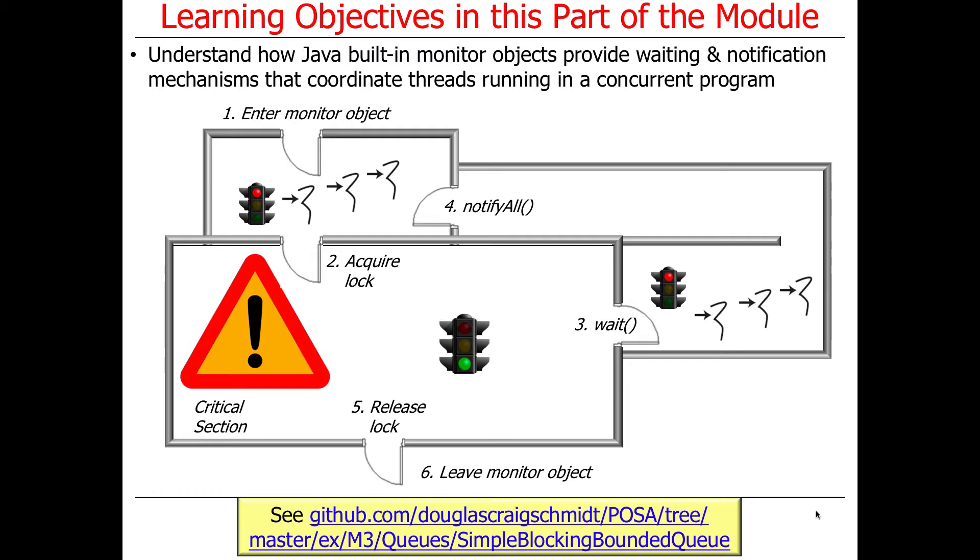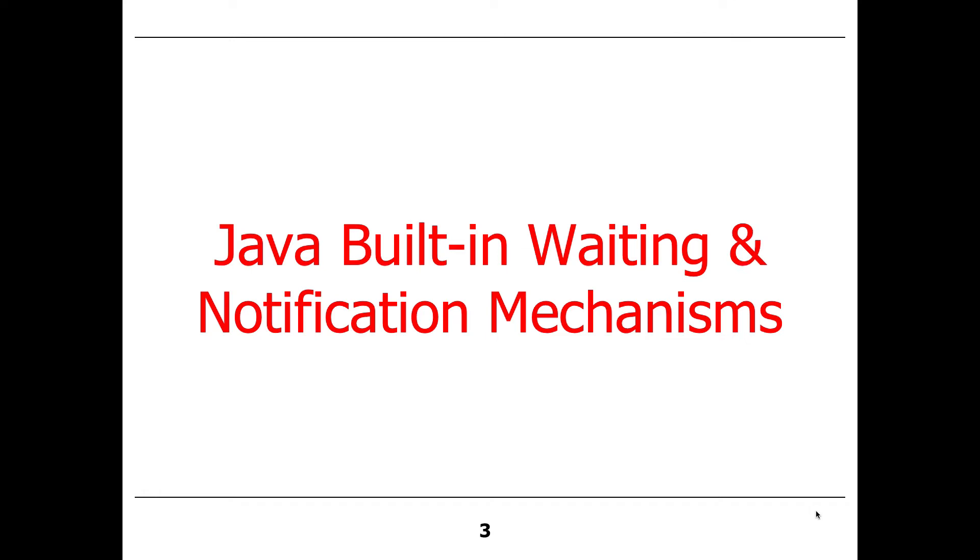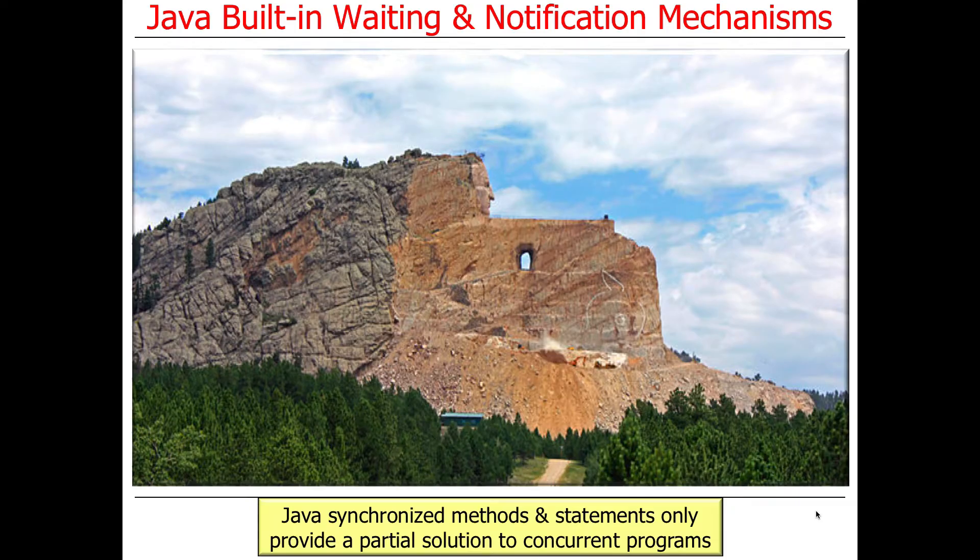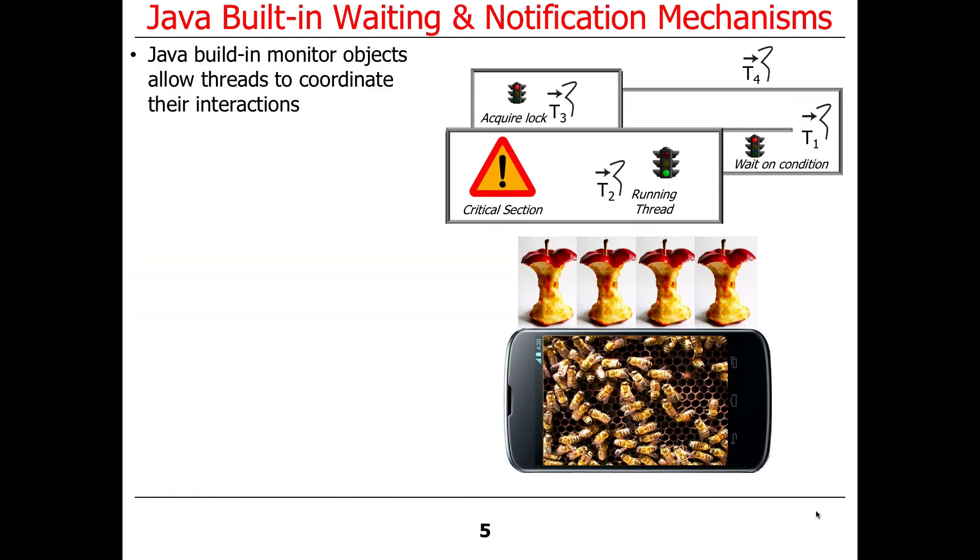Now we're going to use a new example, which is the simple blocking bounded queue example. If you were to run that, you would see it behaves somewhat differently in terms of its performance, although the actual output would be the same. We talked about synchronized methods and statements are only a partial solution. Let's now figure out how to complete the solution.